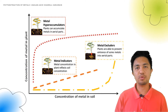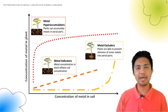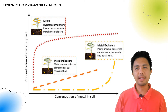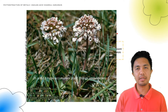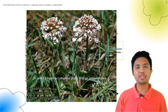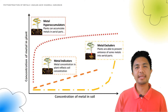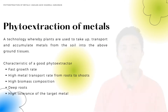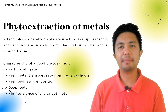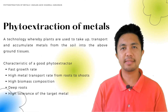Whereas for the third group, which is called the metal hyper accumulators, these are plants that are able to accumulate high levels of metals in the aerial tissues compared to the tissues from the roots.